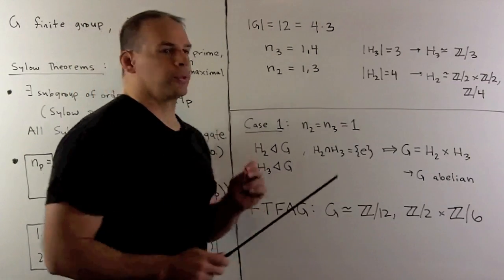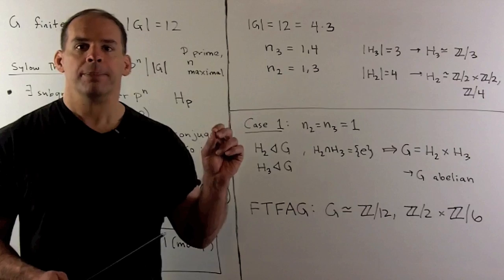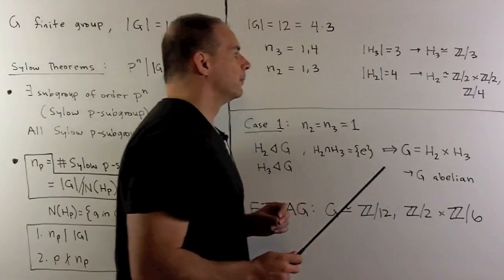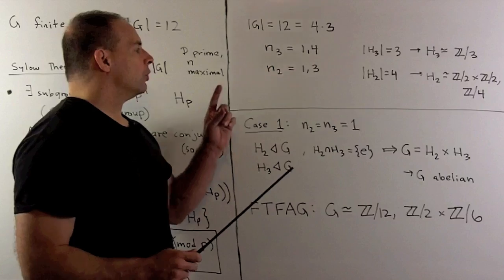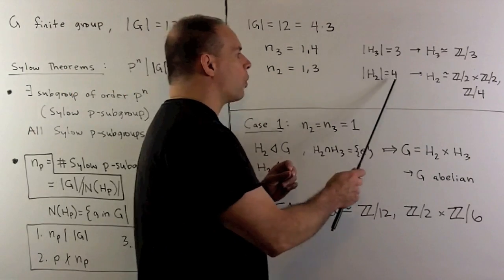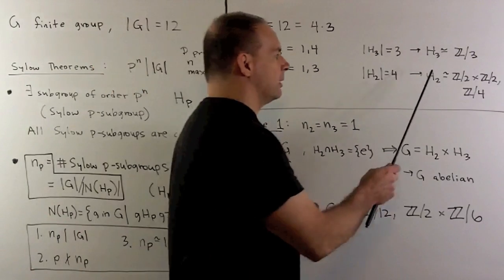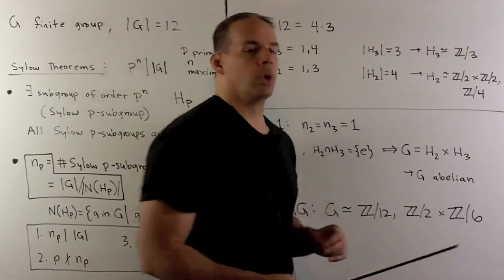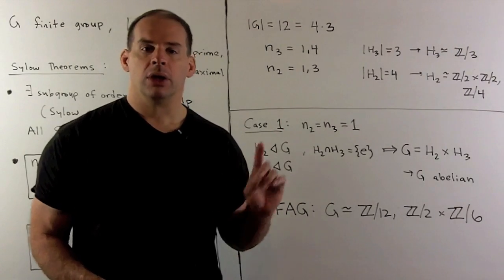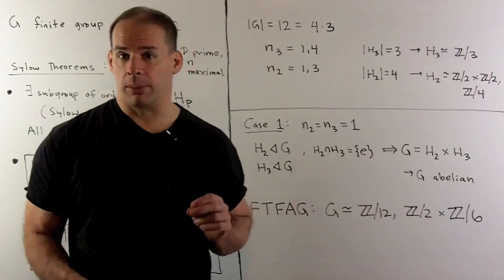For the Sylow 3-subgroups, the order is equal to 3, which means they're all isomorphic to Z mod 3. For the Sylow 2-subgroups, they all have order 4, so they're either all isomorphic to Z mod 2 cross Z mod 2, or all isomorphic to Z mod 4. Note that all of our Sylow p-subgroups are abelian subgroups.